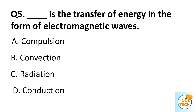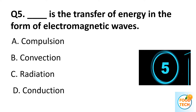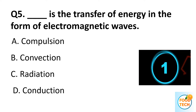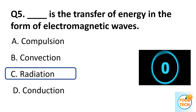Question 5. Dash is the transfer of energy in the form of electromagnetic waves. A. Compulsion. B. Convection. C. Radiation. D. Conduction. Answer C. Radiation.